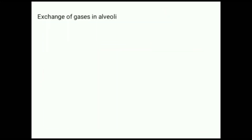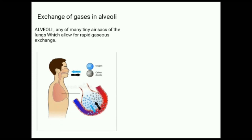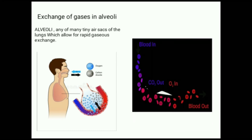The next topic is exchange of gases in alveoli. Alveoli are the many tiny sacs of the lungs which allow for rapid gaseous exchange. See the diagram showing the exchange of gases in alveoli. Each alveolus is surrounded by a network of thin blood vessels. Oxygen passes through the wall of the alveoli into the blood vessels. The blood then carries oxygen to the body cells, while carbon dioxide — a waste product of respiration — passes out of the blood vessels and into the alveoli.